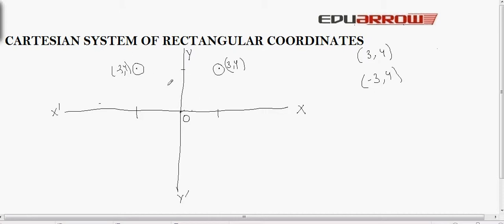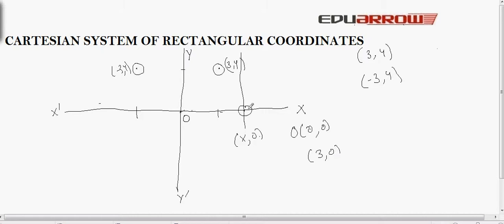The coordinates of the origin are always (0, 0). The coordinates of any point on the x-axis are of the form (x, 0) — for example, the point (3, 0) lies on the x-axis. Similarly, the coordinates of any point on the y-axis are of the form (0, y) — for example, the point (0, 3) lies on the y-axis.